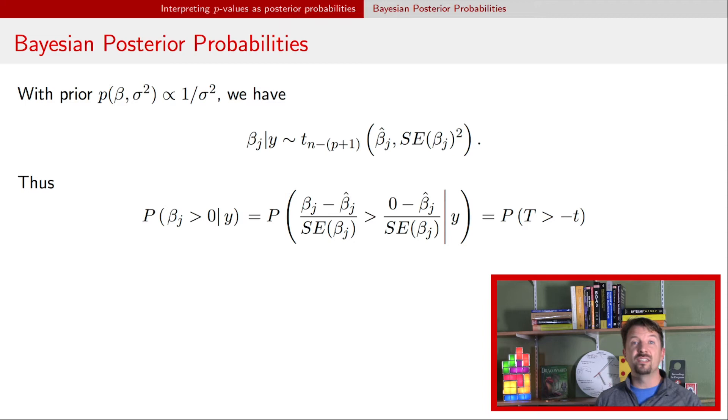Now this would look very similar to our p value. There's the p value where we just have two times a probability that looks similar, but we also have this absolute value sign. And so as we think about how we can take these p values and interpret them as posterior probabilities, we need to account for two things. The first one is that we need to divide by two to get to the posterior probability. But then secondly, we need to understand how to deal with this absolute value.